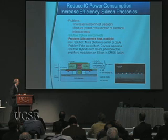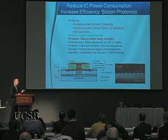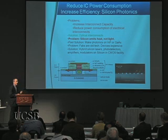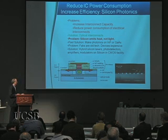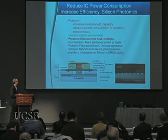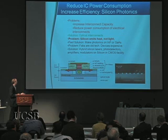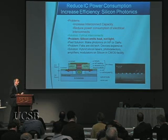An early result showed seven lasers integrated together. Rather than mounting devices one by one, you can do this on a wafer scale and make tens of millions of lasers at one time, with one die having seven that are lasing. We work on lasers, detectors, modulators, and amplifiers, all in a CMOS facility.